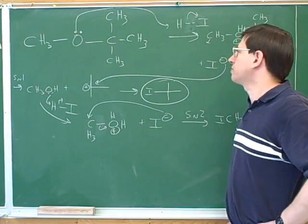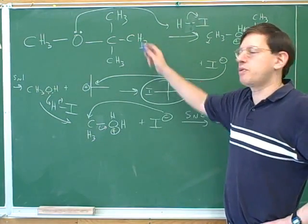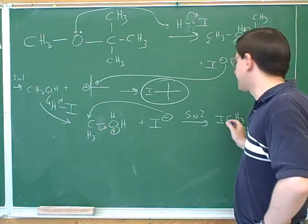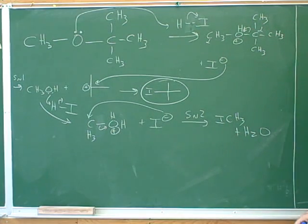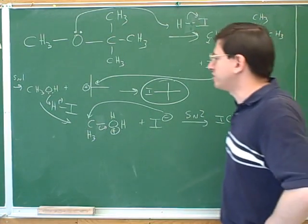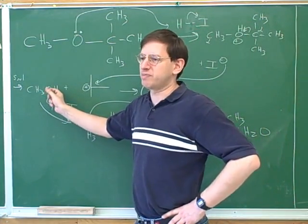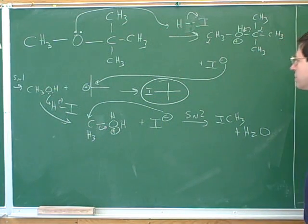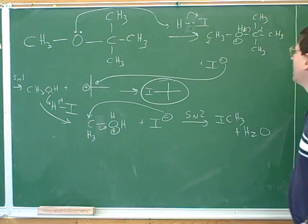Ultimately here we've seen a reaction that we can do with an ether — a way to convert an ether into haloalkanes. The oxygen just leaves ultimately as water. It would be very easy to stop too soon and forget about this second step, so it takes some practice to watch out for the two steps here.